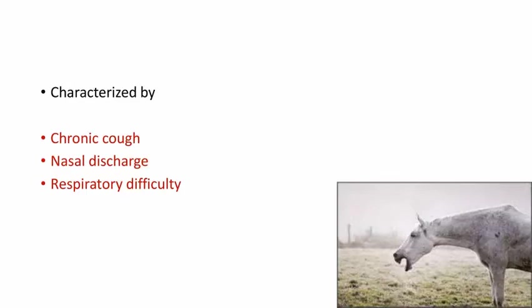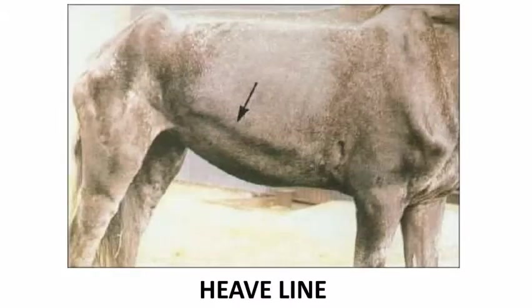You can see the peculiar classic heave line here along the bottom line of the ribs. This is caused by hypertrophy of the abdominal muscles due to the expiratory efforts.